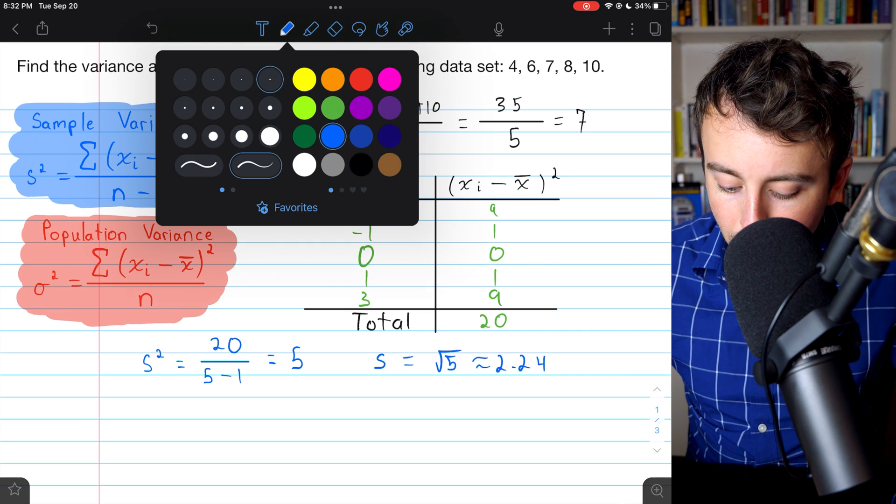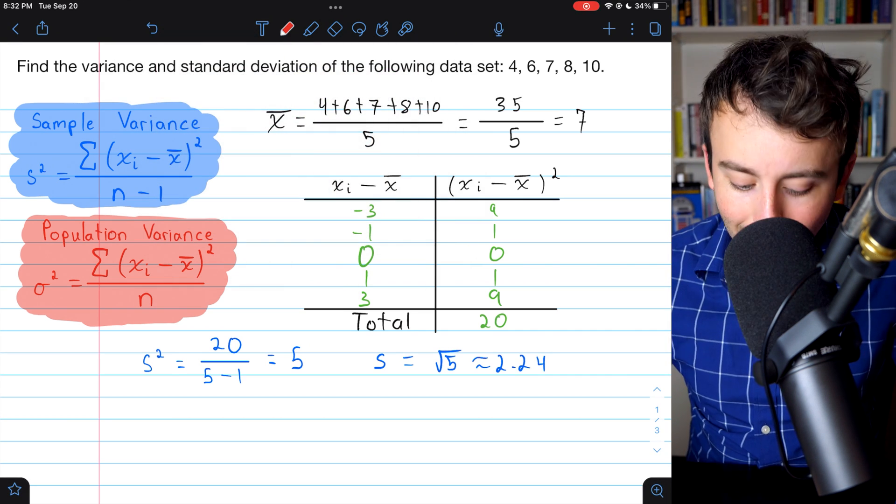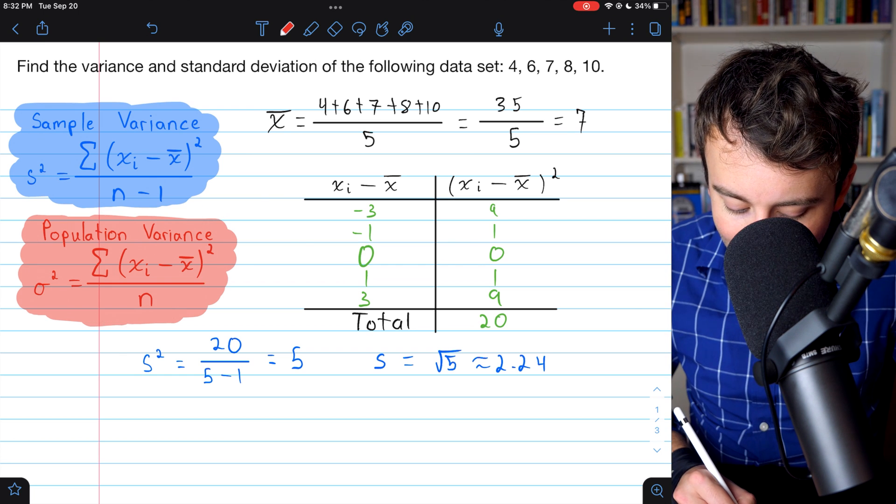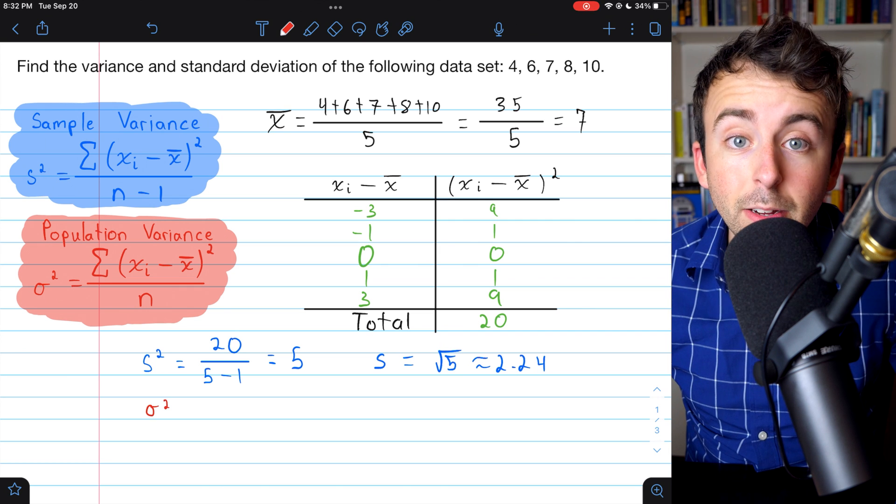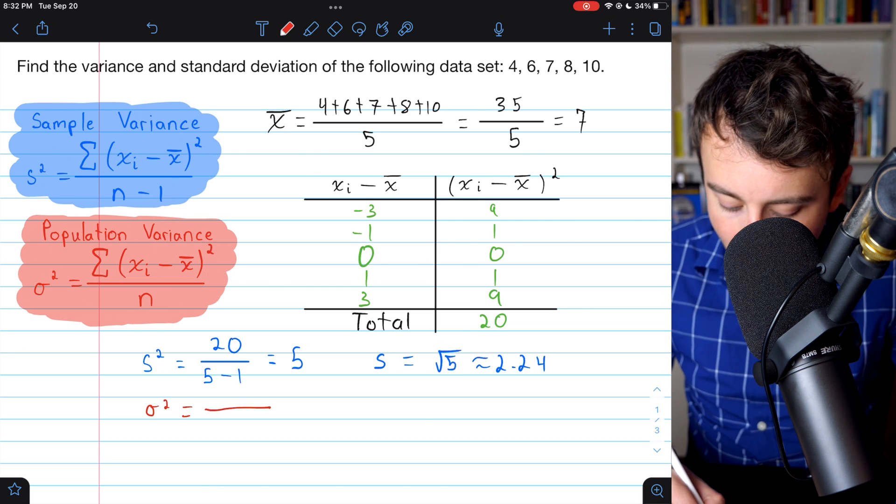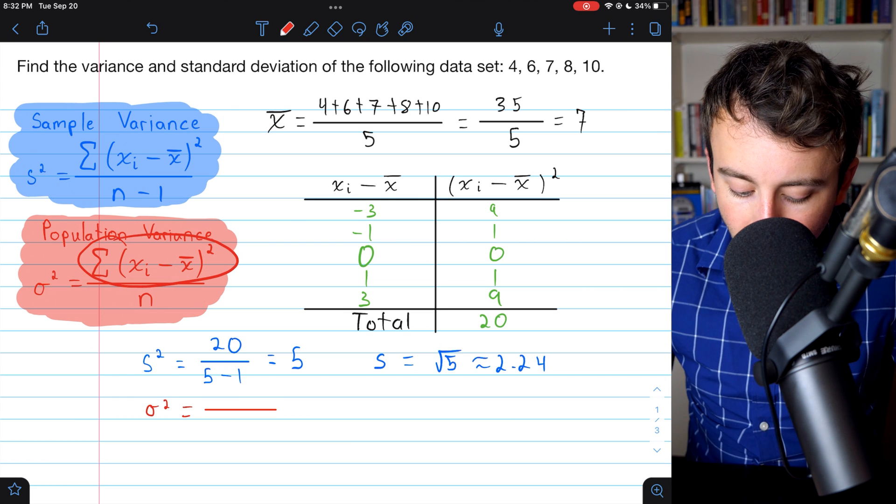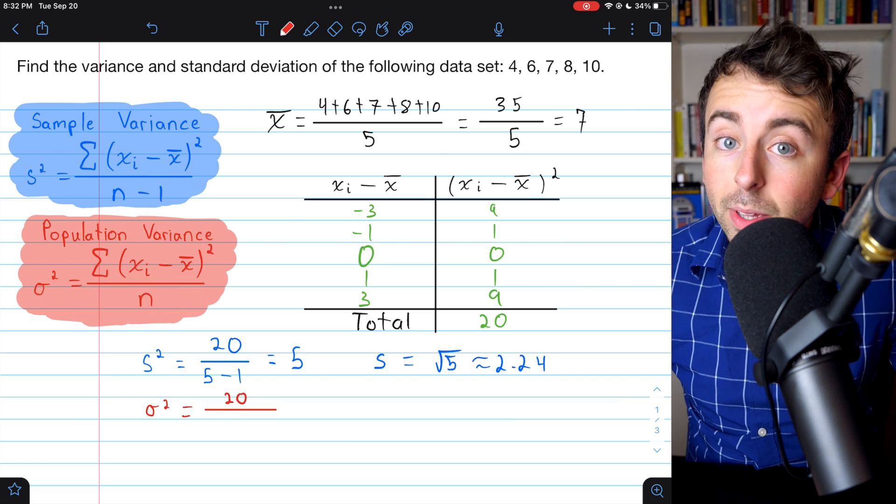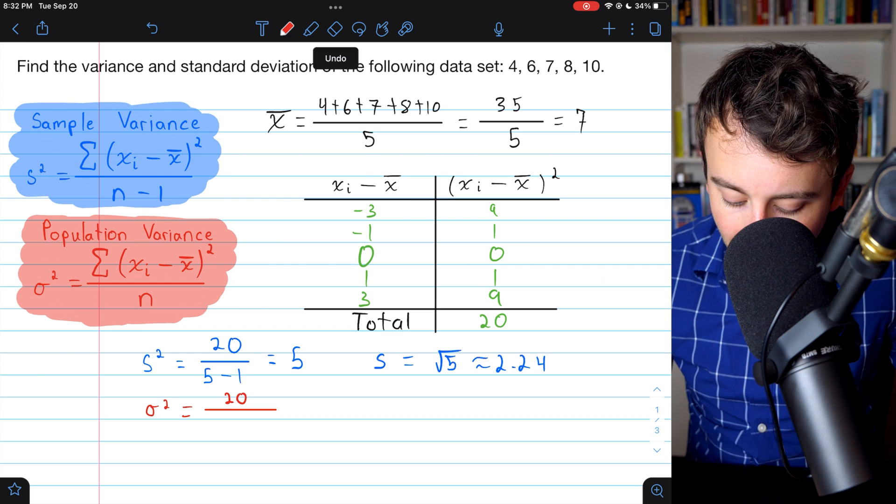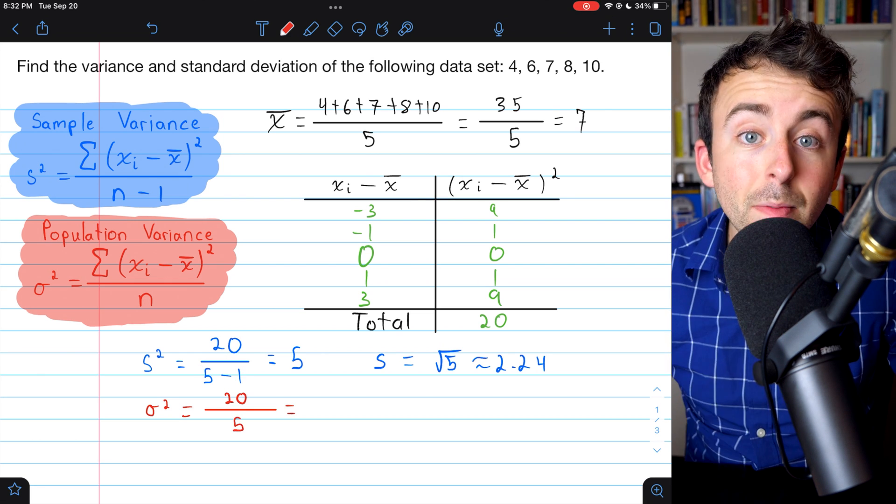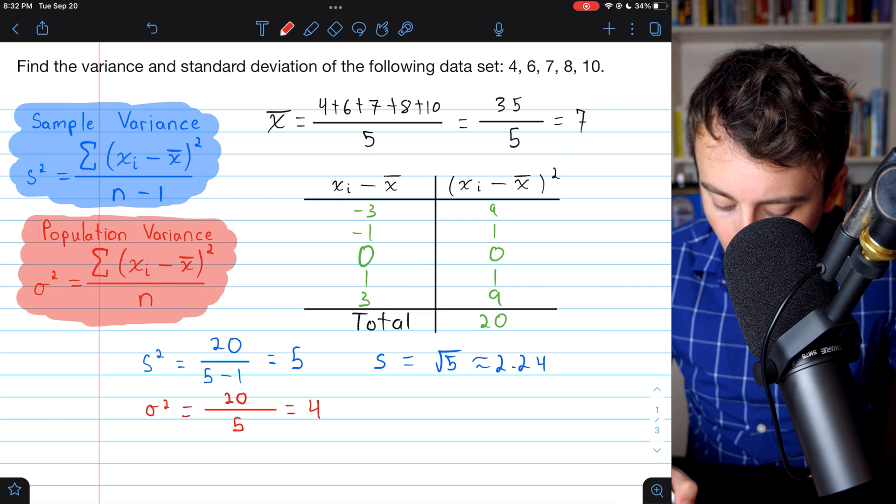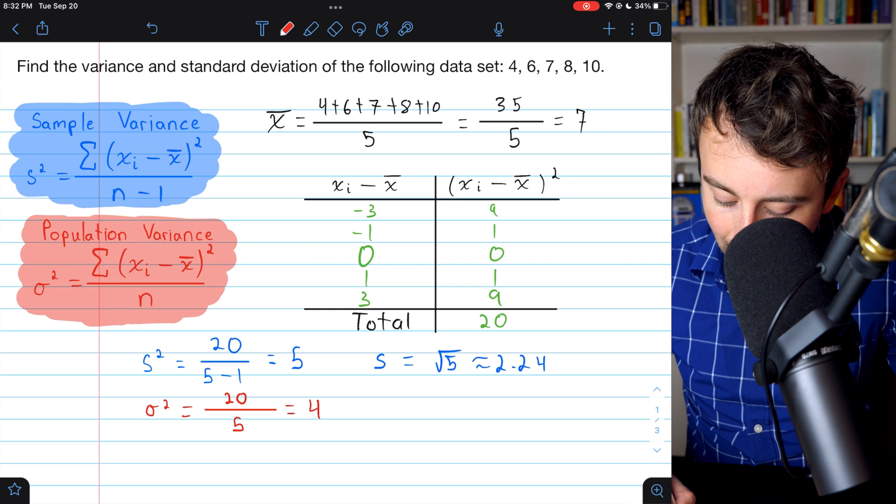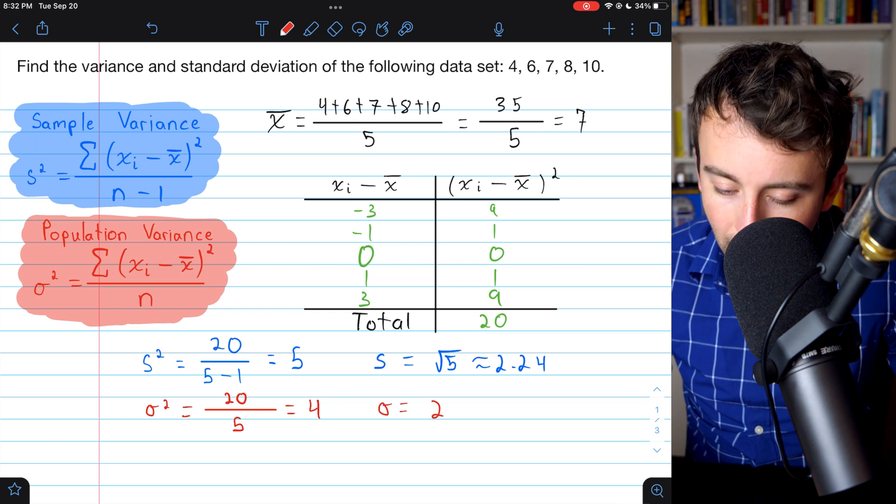Now, if this data actually represented some whole population, we could use the population variance formula. That is a lowercase sigma squared equals same thing. We've got the sum of the squared differences from the mean. So 20 in the numerator. But then instead of dividing by 5 minus 1, we would just divide by 5. And then the population variance would be 4. You take the square root of both sides to find the standard deviation. Standard deviation then would be 2.